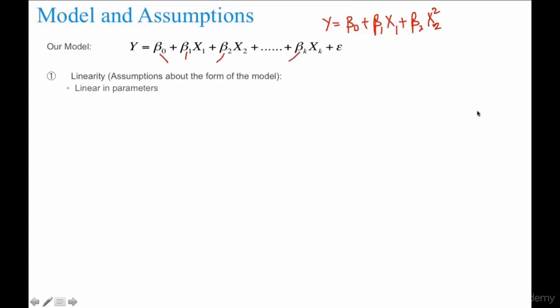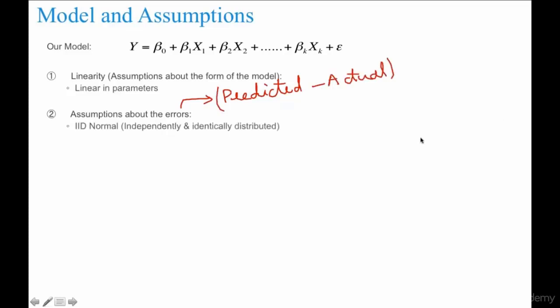Not just the relationship between y and x, but your parameters should enter this equation linearly. That's one assumption. Another assumption is about error. How do you get error? Error equals predicted value minus actual value. We've already discussed and we have seen that also.